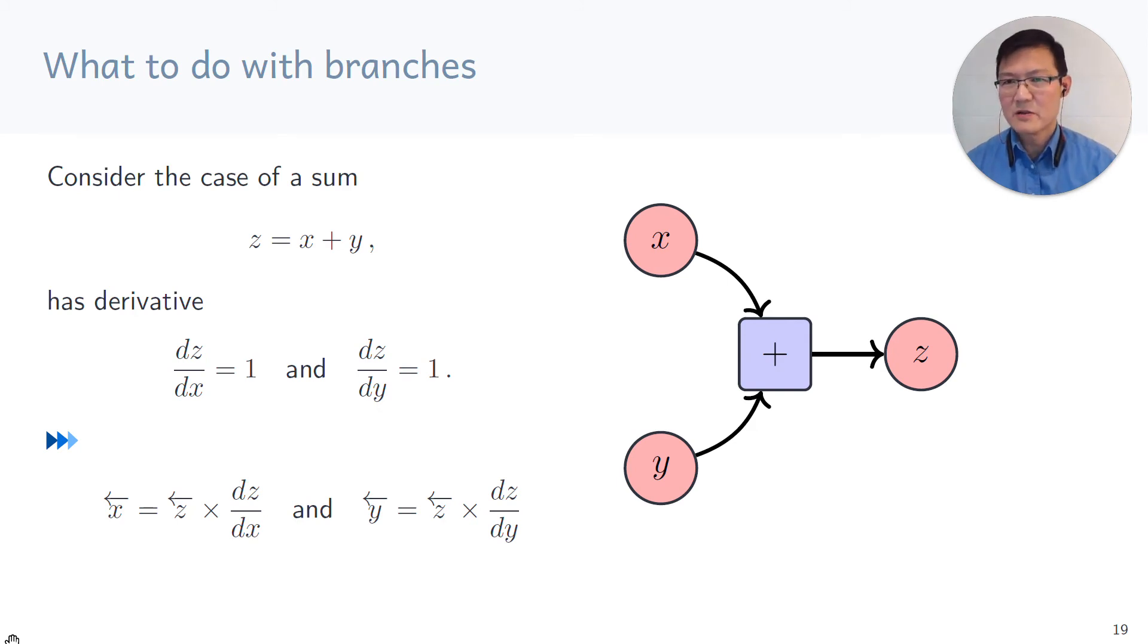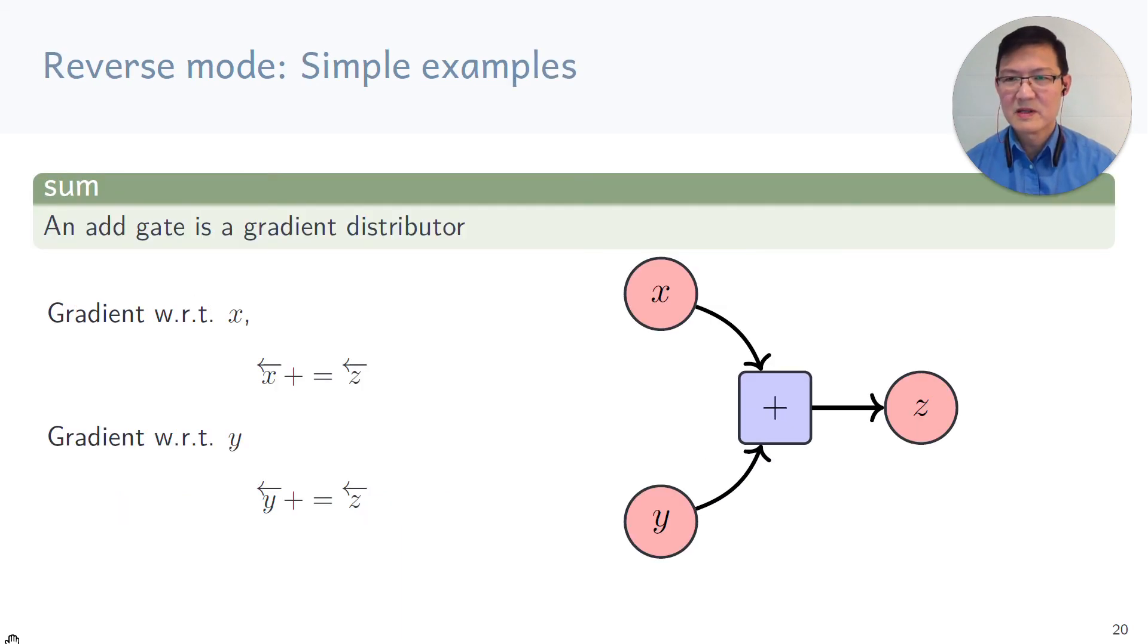What do we do with branches? If you look at the case of the sum, for example, Z is X plus Y, then by just looking at the derivatives, you know that DZ DX is one and DZ DY is one. By applying the accumulation rule we just saw, the adjoint of X is the adjoint of Z multiplied by DZ DX. But we can see that DZ DX is one. So the adjoint of X is actually the adjoint of Z and it's just passing through. Which means that we can see that the add gate is actually just a gradient distributor. So the gradient coming from the output Z just gets copied to both X and Y.